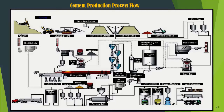The heat used for the combustion process in the rotary kiln system comes from the main burner and calciner burner with coal or fine coal as fuel. Fine coal is obtained from the coal milling process or the coal mill system.